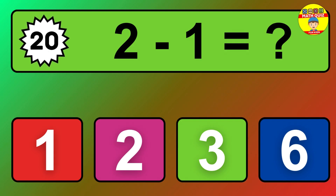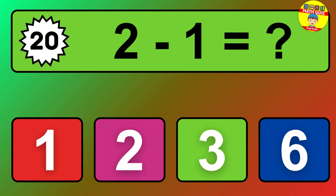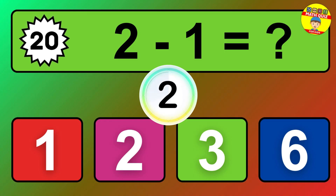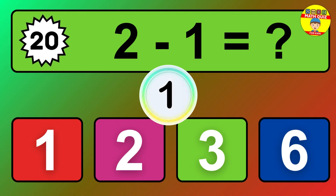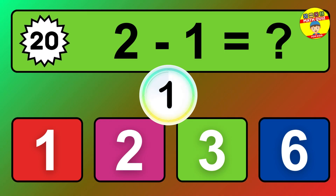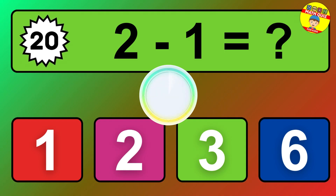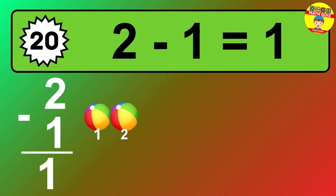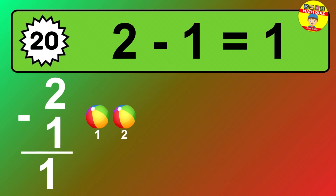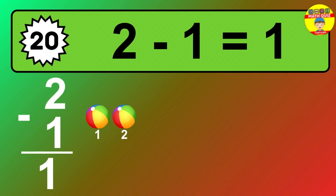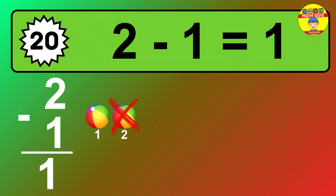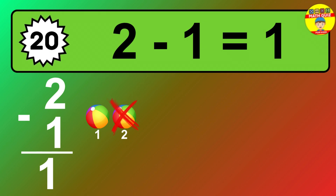Question twenty: two minus one equals what? So the answer is two minus one is one. Let's count it: one.